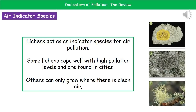Considering air indicator species, we're going to think about lichens. Lichens are a very good indicator of air pollution. Some will grow where there's high pollution, some where there's moderate pollution, and others will only grow where the air is unpolluted and clean.